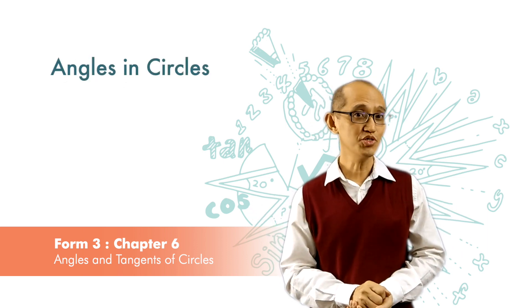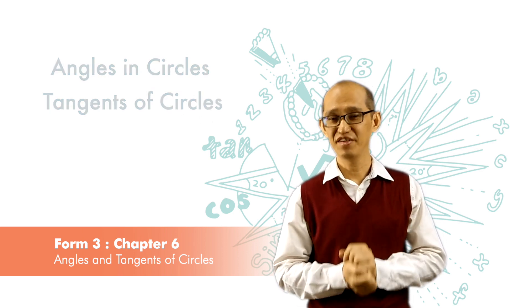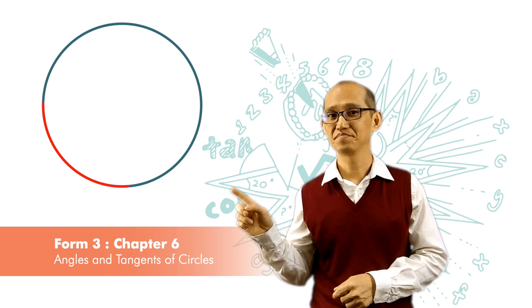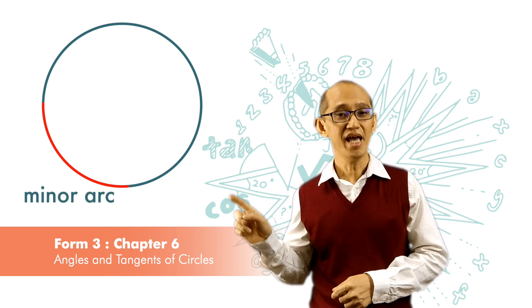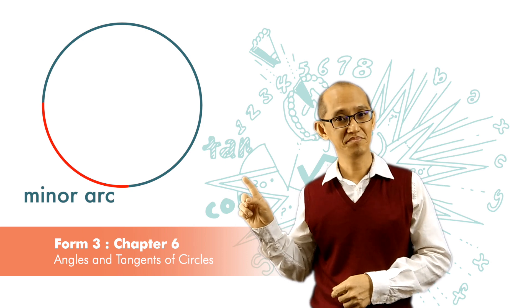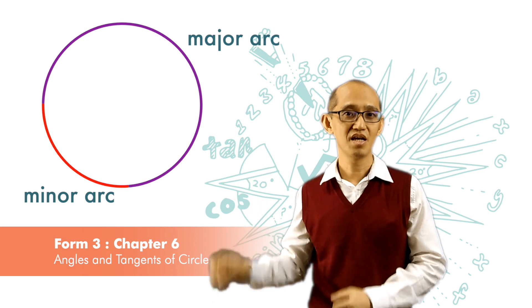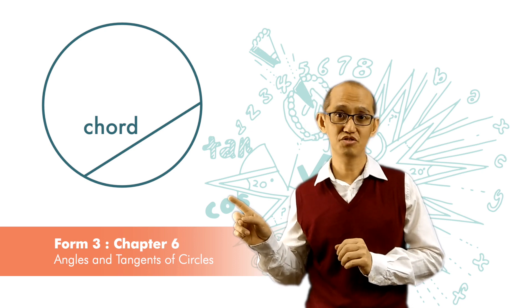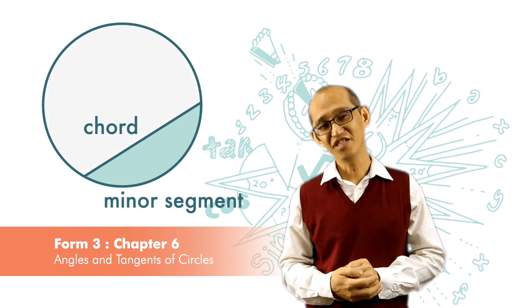Today we are going to learn about angles in circles and also tangents of a circle. Just a very quick revision. This arc in red is called a minor arc, and this arc in purple is called a major arc, and this one is called a chord. When a chord is drawn, we have a minor segment and also a major segment.